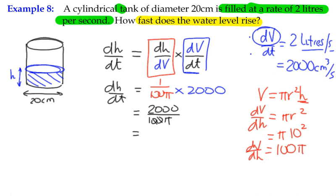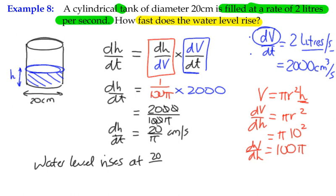And that simplifies to 2000 over 100π. Notice that we can, it becomes 20 over π. Notice that that is a constant term. In other words, the change in water level, it's rising at a constant rate. It's not dependent on any variable. So dH/dt is 20/π centimetres per second. It's positive value, so it's increasing. That works out around about 6 and a bit centimetres per second if you were rounding it in terms of a decimal. So the water level rises at, we'll just keep it as an exact value, 20 over π centimetres per second.